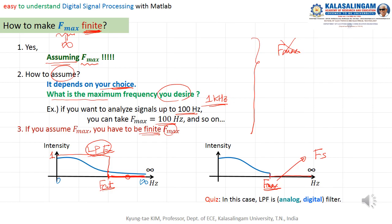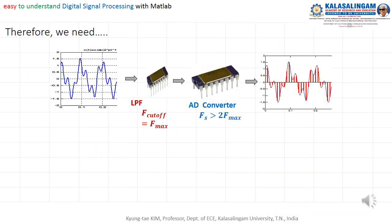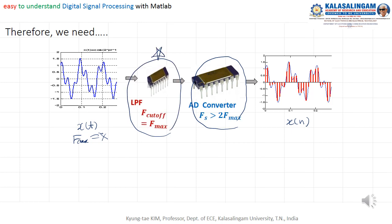Beyond the cutoff frequency, the gain is zero. So the output has a clear F-max because everything beyond cutoff is zero. From this, you can decide Fs. One more time: for this, you have to use a low-pass filter. This concept is very, very important. Most of the cases, we do not know F-max, so we need to apply a low-pass filter to the signal with the cutoff frequency equal to F-max.